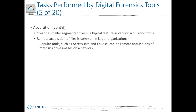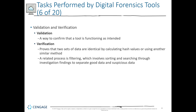For remote acquisition, segmenting data is more realistic based on the size of data being acquired. After we acquire anything, we have to verify and validate. Validation confirms the tool is functioning as intended — when we acquire evidence, we validate the tool captured it correctly. Verification provides two sets of data that are identical by hashing. Validation focuses on the tool; verification focuses on the process.